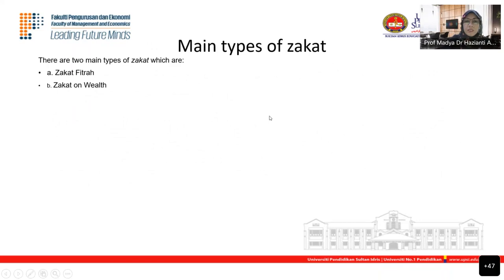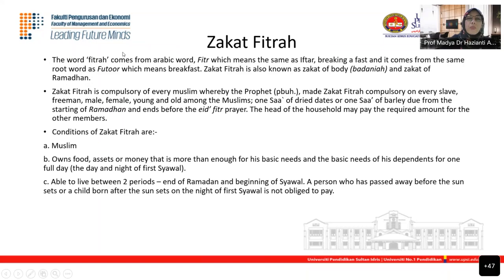There are two main types of zakat: zakat fitrah and zakat on wealth. Zakat fitrah is simple — just one type. Zakat on wealth has many sub-categories. Fitrah comes from the Arabic word meaning the same as iftar — breaking a fast — and comes from the root word meaning breakfast. It is known as zakat of the body and zakat of Ramadan.